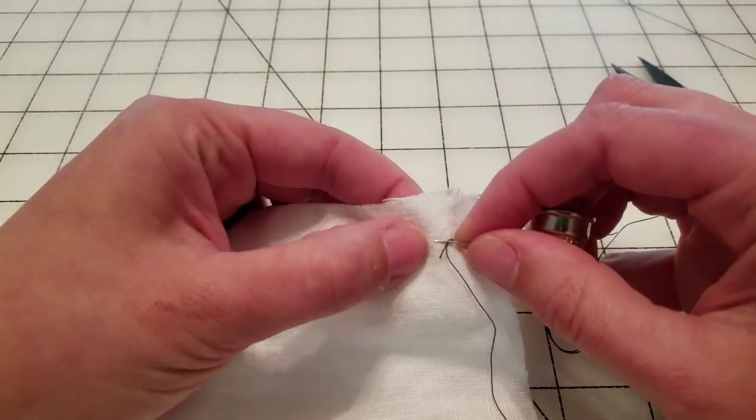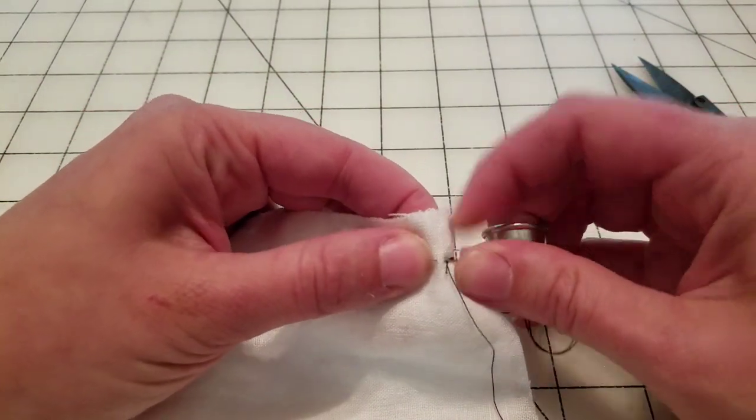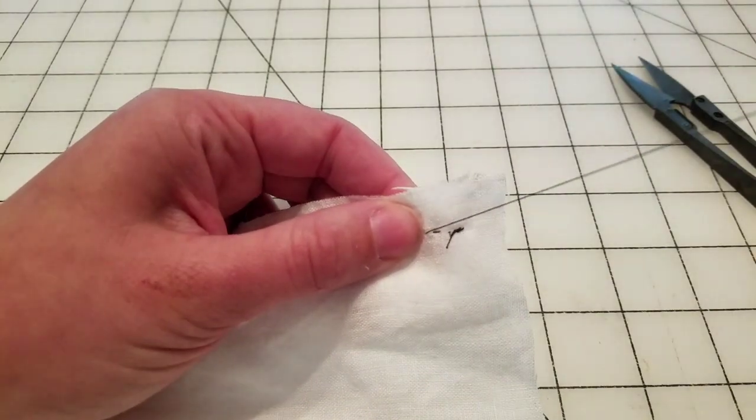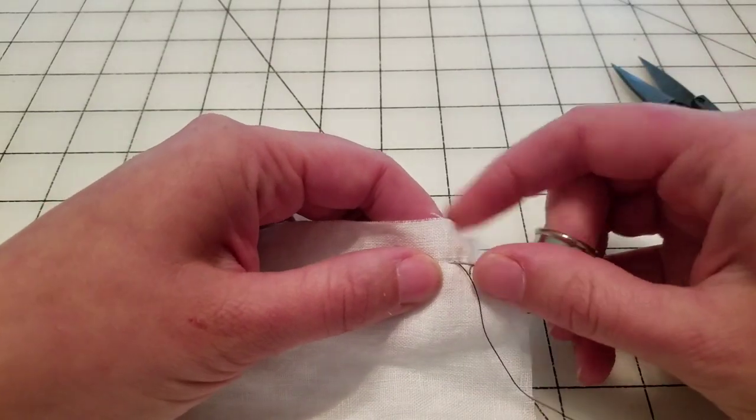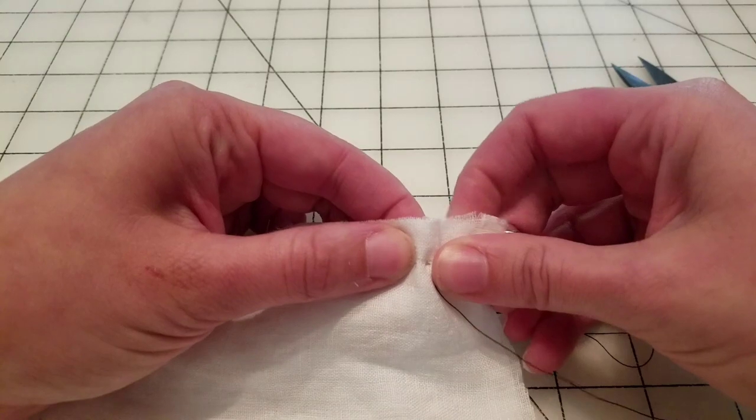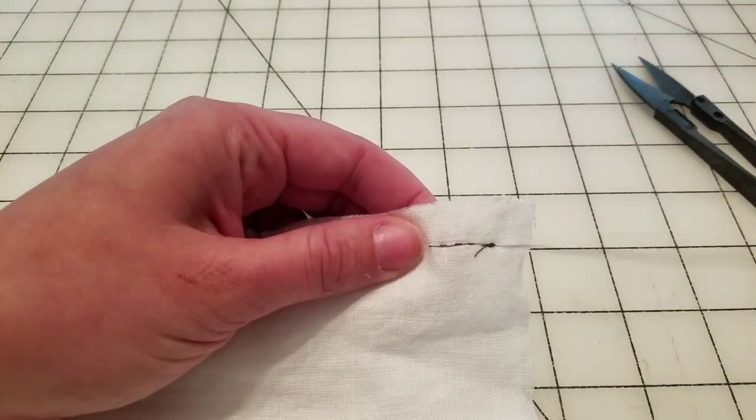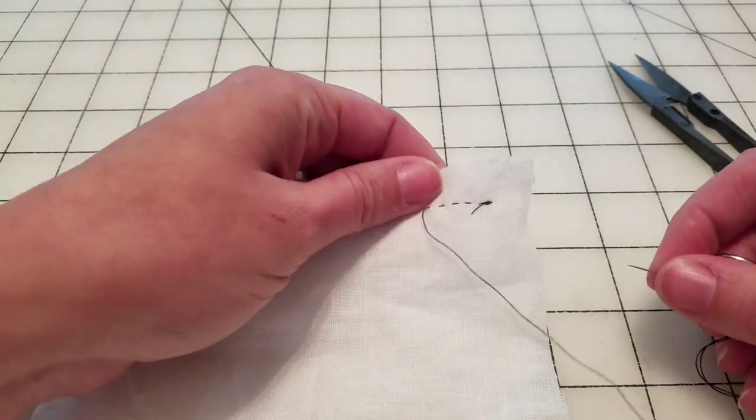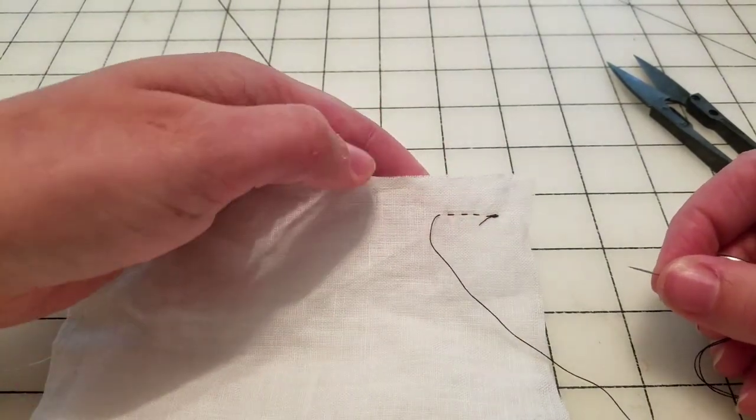Running stitch you just go in and out and in and out. Like that. In and out, in and out. And it makes a dotted line and does the same on both sides. This is also the first step towards learning blackwork embroidery.